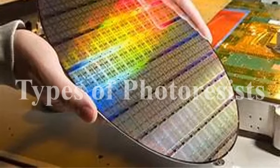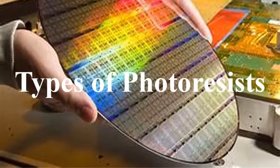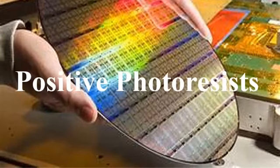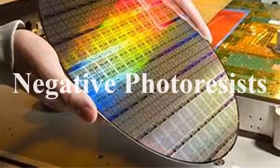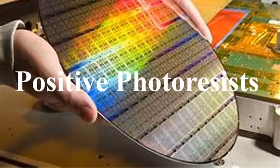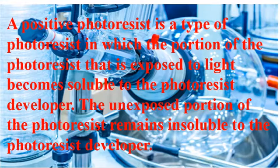Now let's discuss the types of photoresist. These organic chemicals exist in two types. One type is known as positive photoresist, and the second type is known as negative photoresist.